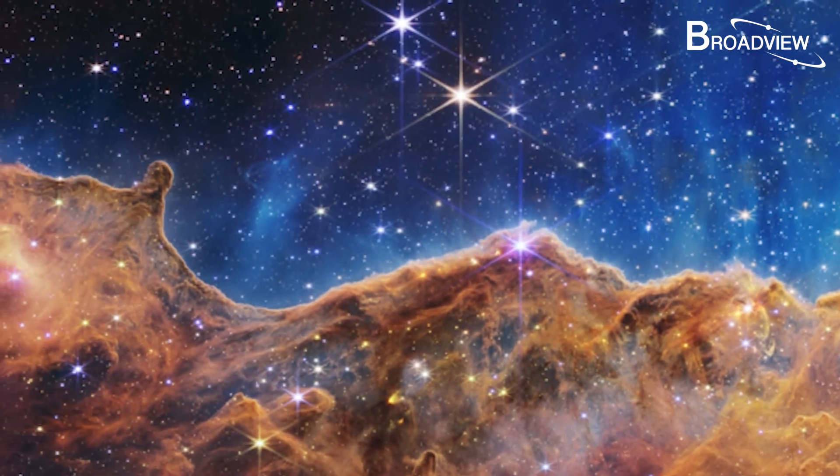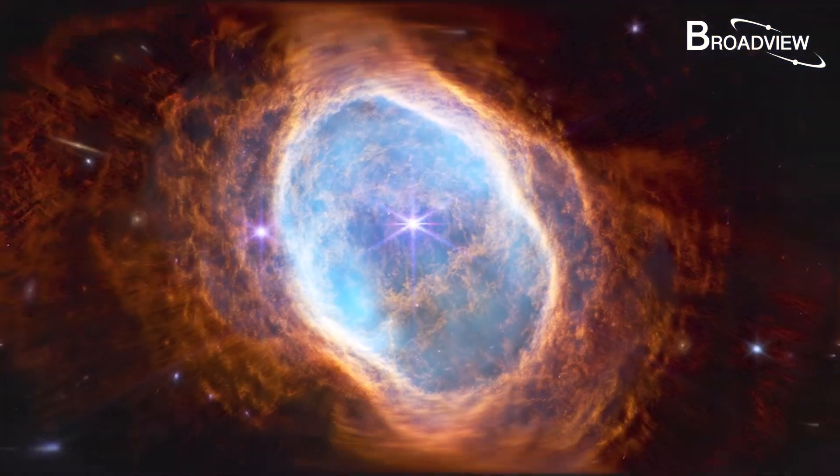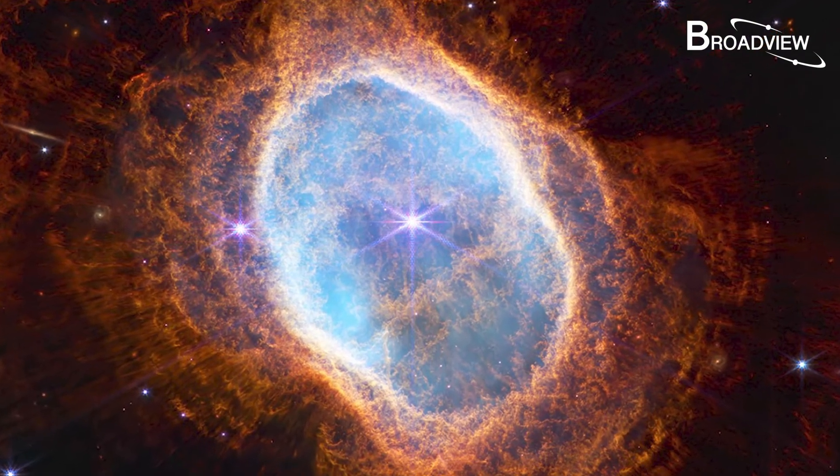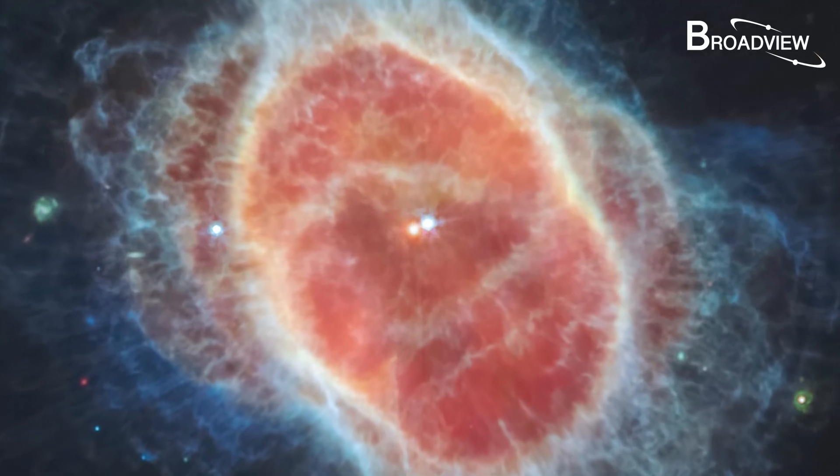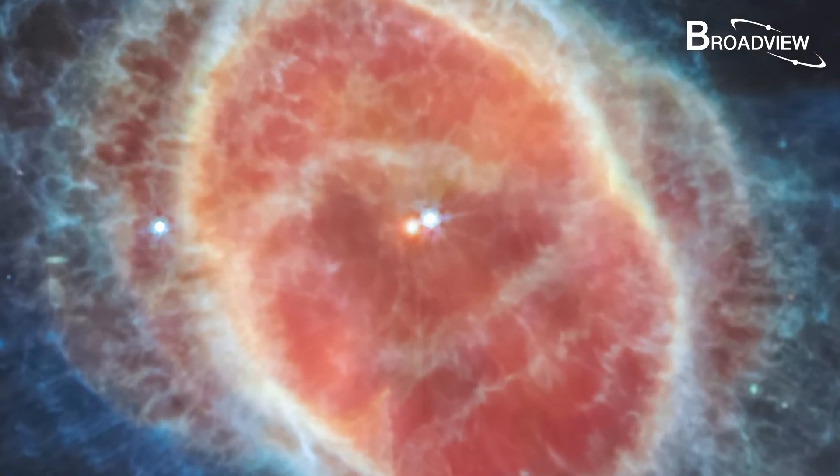People in the southern hemisphere can see it when they look up. There's another Southern Ring Nebula image that is also really interesting. Here, the two bright spots are two stars. The young star in the middle is attending the funeral of the old star.